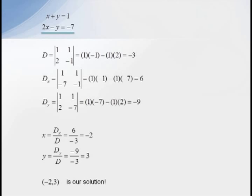Now we're ready to solve our system. By Cramer's rule, X equals DX over D, which equals 6 over negative 3, or negative 2. And Y is equal to DY over D, which is negative 9 over negative 3, which equals positive 3. Hence, negative 2, 3 is our solution.